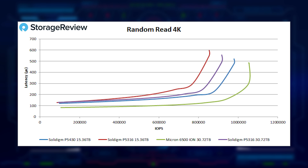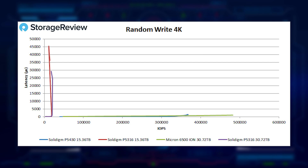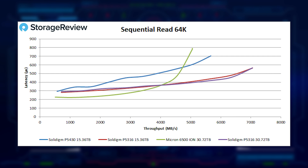Random write 4K is where we really see the effects of the indirection unit change come into play. No chart shows more visually and clearly why you want a smaller indirection unit on these drives. The P5430 lies relatively flat alongside the 6500 ION, while the P5316s really show where they struggle with small-block random writes — about the worst possible workload for QLC drives. Looking at sequential reads at 64K, the P5430 does okay but falls a little behind its predecessors, which were clearly optimized for the 64K indirection unit.